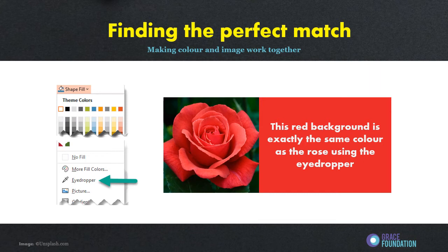And just a quick tip to help you find the perfect match for any colour: if you are starting with a great image - say an image of a rose - and you want to match your colour scheme to that image, it's a brilliant way to get great design every time. To make that colour and image work together in PowerPoint, go to the eyedropper tool in the colours section and hover over the rose - you can select any of the petals or darker elements to get a colour that will work exactly on your PowerPoint. This red background is exactly the same colour as the rose using the eyedropper, and it's a really nice way of bringing balance and unity to an image, keeping it crisp and clean, and helping students focus on the learning rather than being distracted.